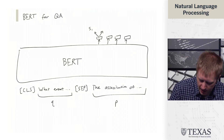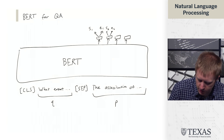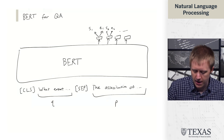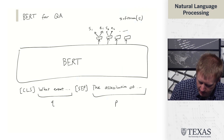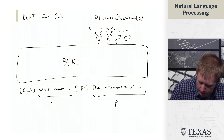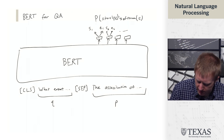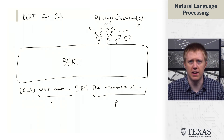We have S1 and E1 for start and end scores, S2, E2, etc. Then we softmax over the SI to give the probability of start given P and Q, and the same for EI to get the probability of end.